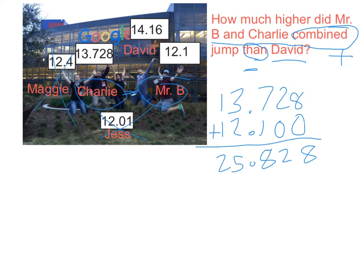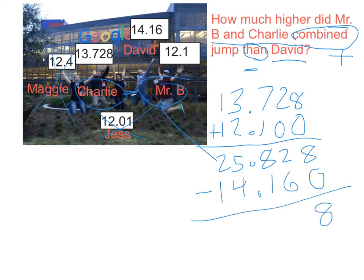I'm not done because this is only my height combined with Charlie's height. What I need to do is then take away David's height from that. So I subtract 14.16. I don't have enough place values, so I put on a zero. 2 minus 6 — well, I can't do that. I need to borrow. That becomes a 7 because I'm taking 10 away from that place value and giving it here. So 12 minus 6 is 6, 7 minus 1 is 6.